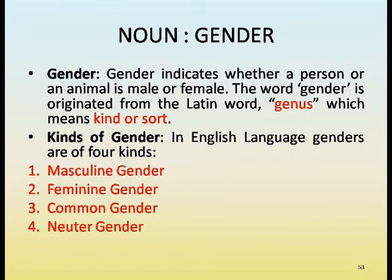Noun Gender. Gender indicates whether a person or an animal is male or female. The word gender is originated from Latin genus which means kind or sort. In English language, genders are of four kinds: masculine gender, feminine gender, common gender, and neuter gender.